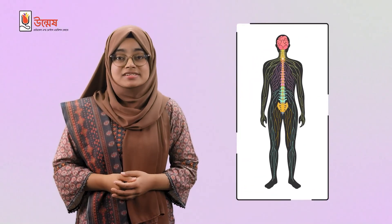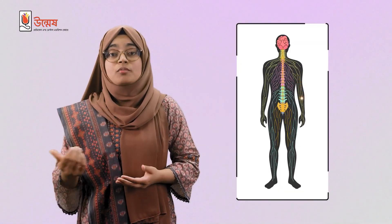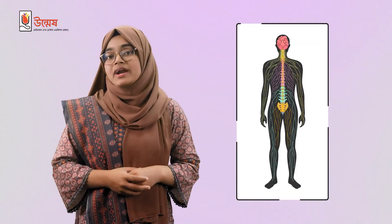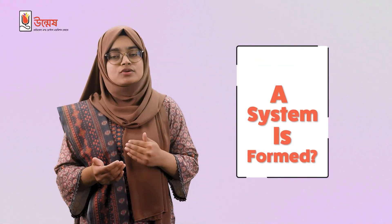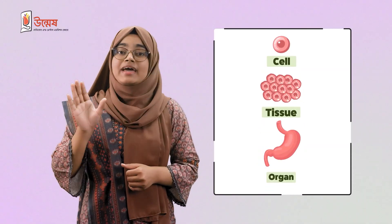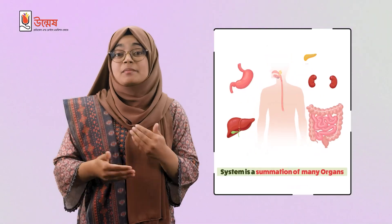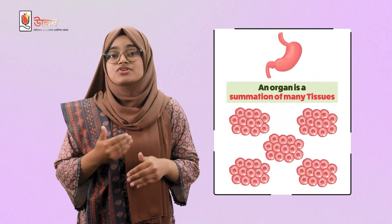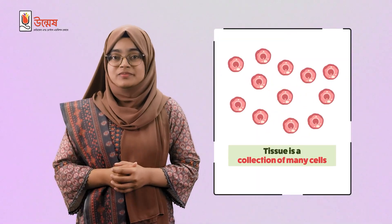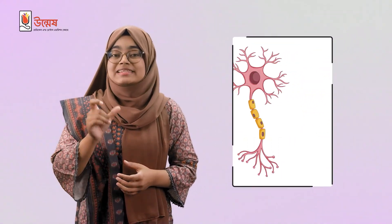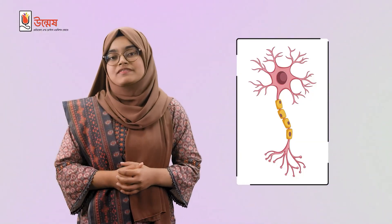To define the nervous system, we can simply say it is the system that carries impulse to different parts of the body. A system is formed from cell to tissue, tissue to organ, and organ to system. That means a system is a summation of many organs, an organ is a summation of many tissues, and a tissue is a collection of many cells. For the nervous system, this cell has a special name which is neuron, and that is the unit of the nervous system.